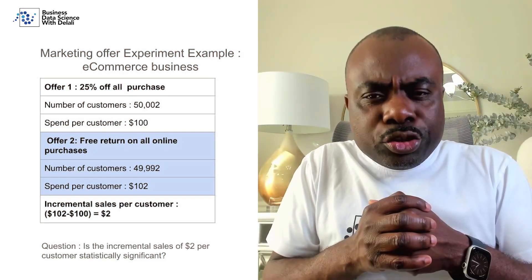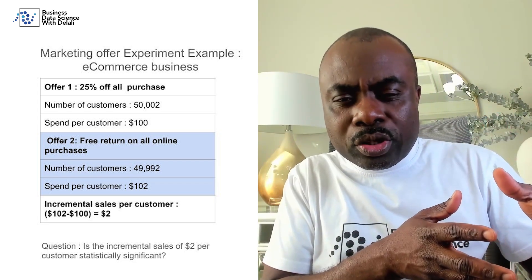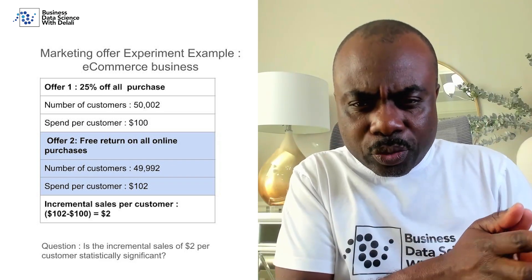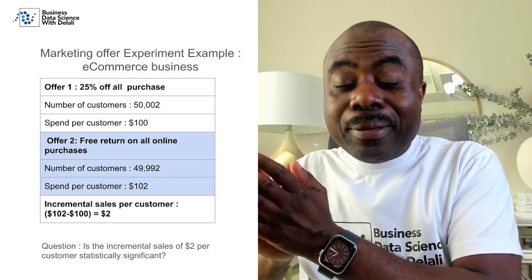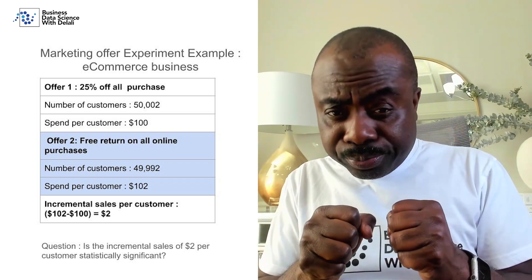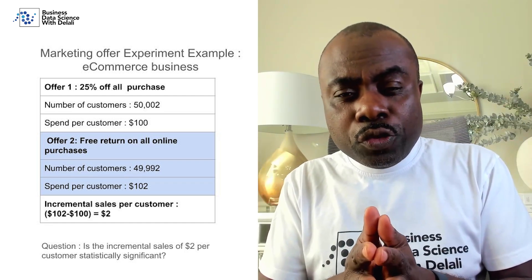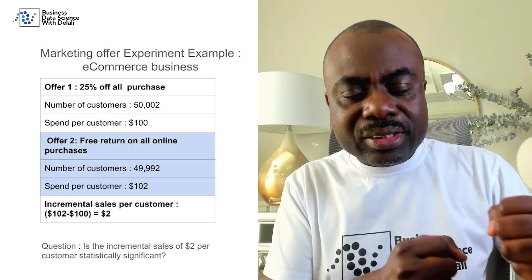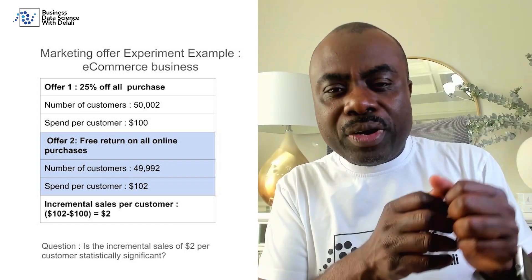Let me give you a good example. Assume you run a marketing campaign. For one group — the control group, Group A — you give them 25% off their purchases. For another group, you offer free returns on any purchase. After running the campaign for one month, the group with 25% off saw sales per customer of $100.